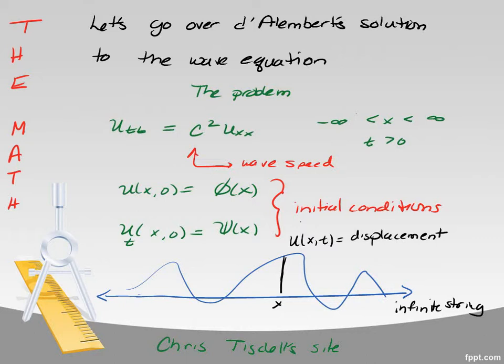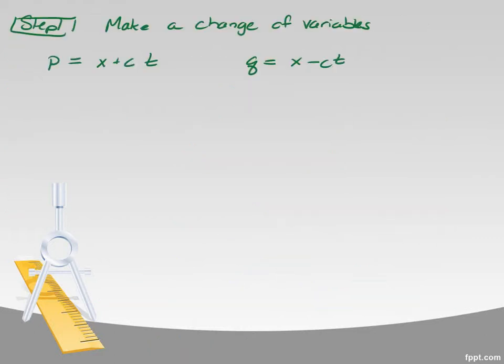So I got most of this from Chris Tisdale's site, but you can get it anywhere you look up d'Alembert. So the idea is to make a change of variables by letting p equal x plus ct and q equal x minus ct.